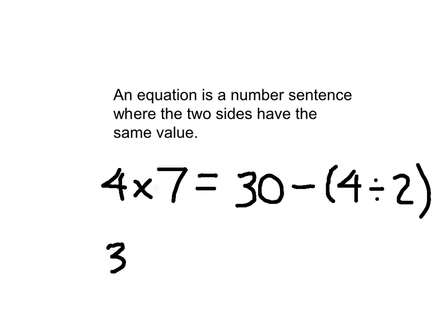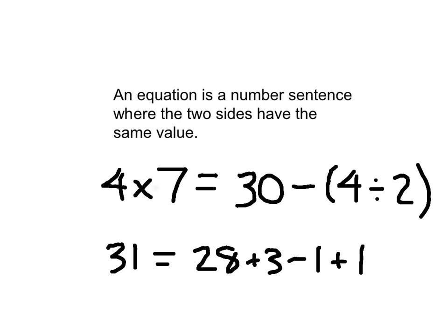Here's another example. If I wrote 31 on the left-hand side of my equation, whatever has to be on the right-hand side would have to have the same value. I just need to write an expression on the opposite side that has the same value as 31. So for instance, I could write 28 plus 3 minus 1 plus 1 again. Those would have the same value. In this case, on both sides of our equation we have expressions. 4 times 7 is an expression. 30 minus 4 divided by 2 is an expression. And so these expressions on both sides of our equation must have that same value — otherwise we would not have an equation.